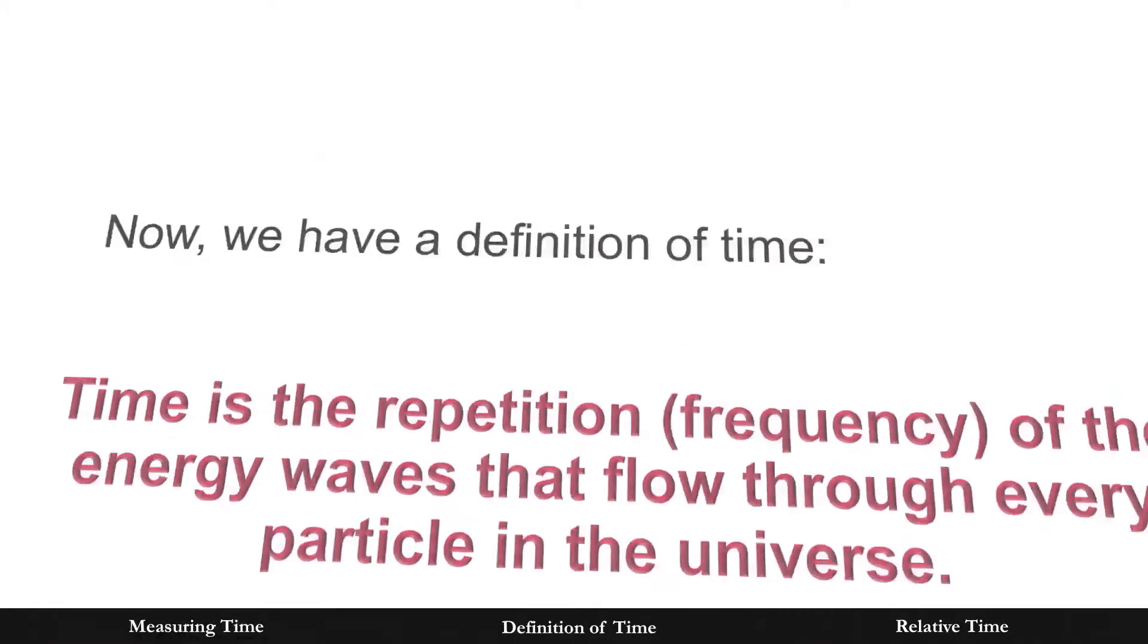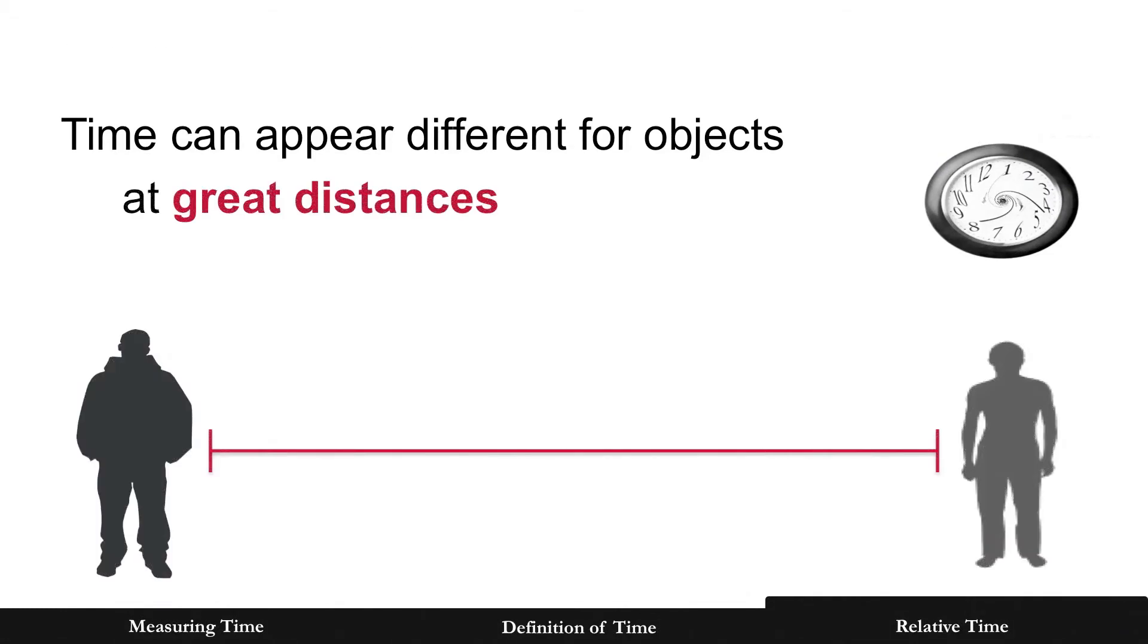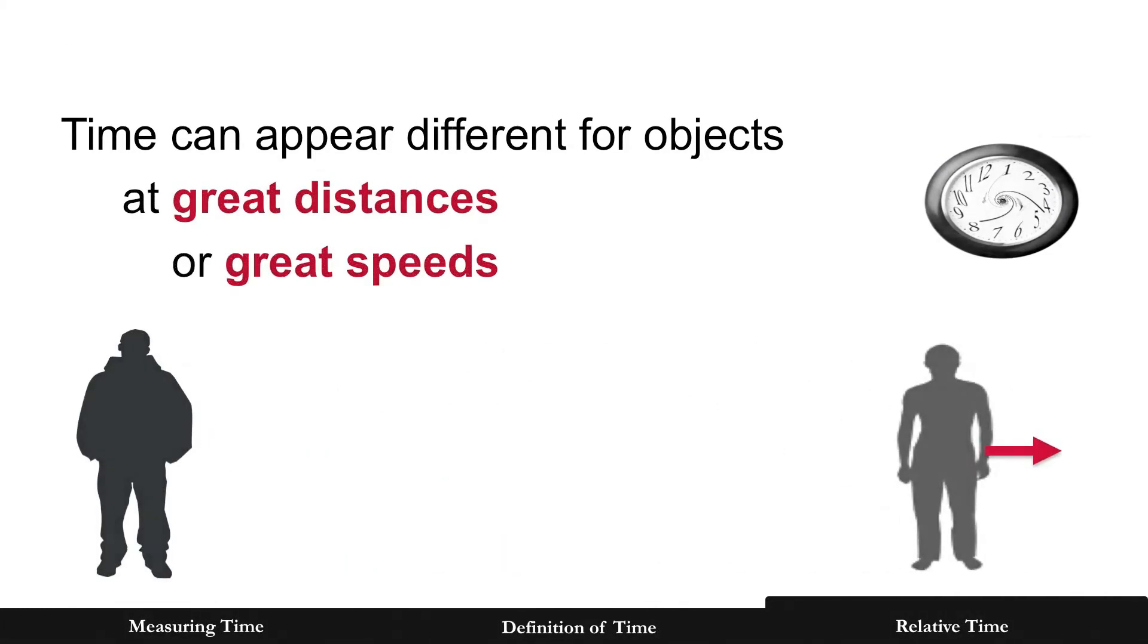But there is a twist. Time can appear different for objects at great distances or great speeds. Why?